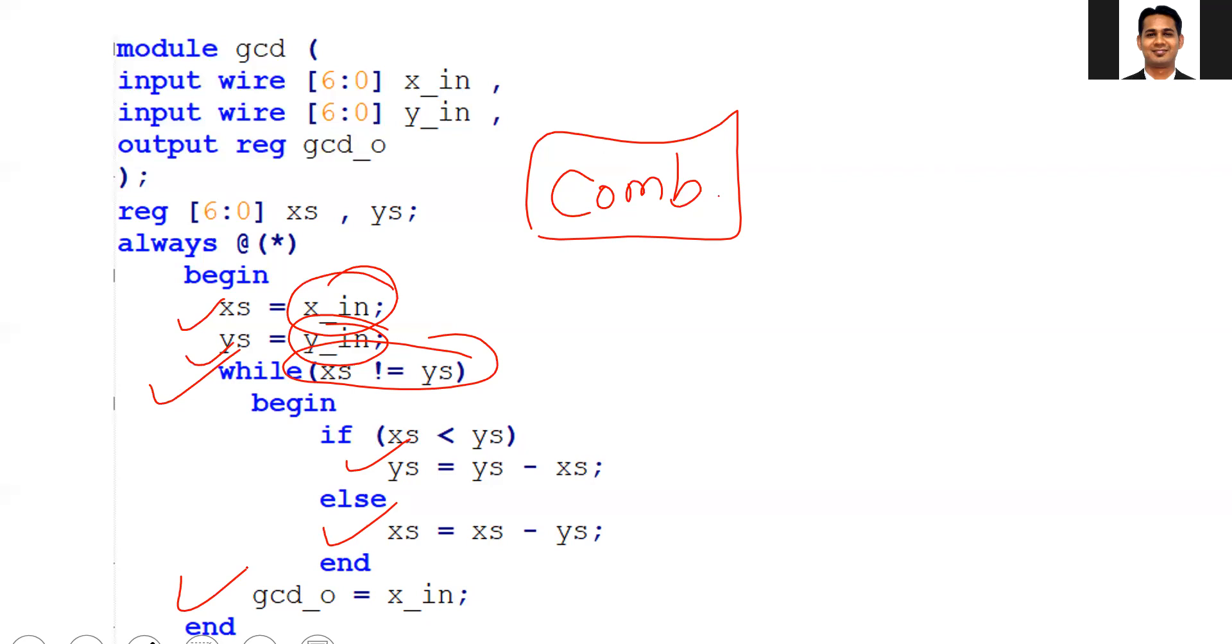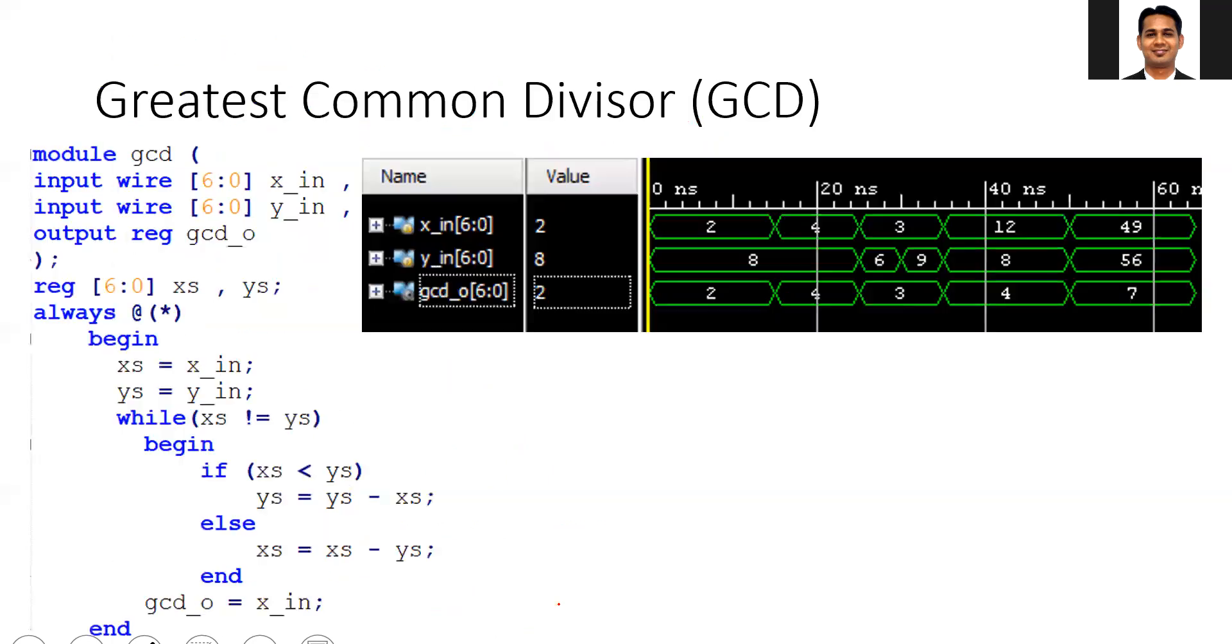This looks good. I think here it should not be x_in x_0. There are two mistakes. This should be 7 down to 0, sorry 6 down to 0, and this should be x_s. This is the code which was written by the student, and then the student also did the corresponding simulations and got the correct output. You can see they got the correct output, so everything was good. Students were happy that they were getting the correct output, but still their solution was wrong.